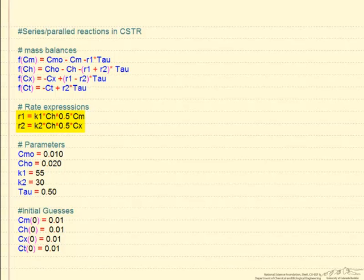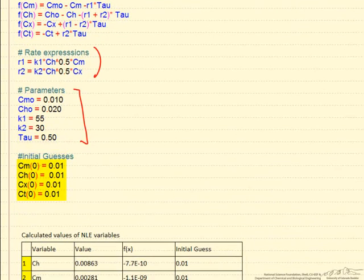I've written the rate expressions next, and then the parameters that we need to solve this, where I've calculated tau as 1000 divided by 2000, so it's a half hour. For this program to work, we guess what we think the answers are, and then we let it iterate to the final answer.